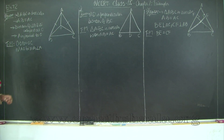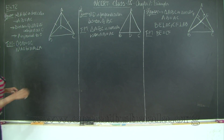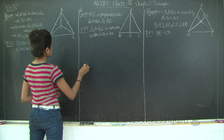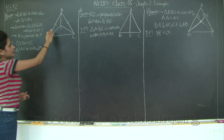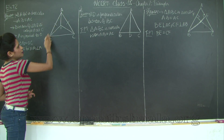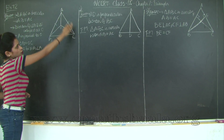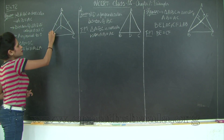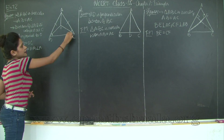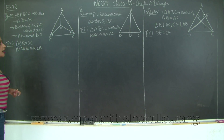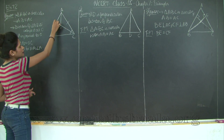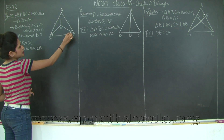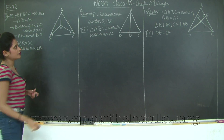Let us see how we are going to prove OB equal to OC. If I look at the entire diagram, AB is equal to AC, therefore angle ABC is equal to angle ACB, because they are angles opposite to equal sides of an isosceles triangle. Therefore half of angle ABC is equal to half of angle ACB.